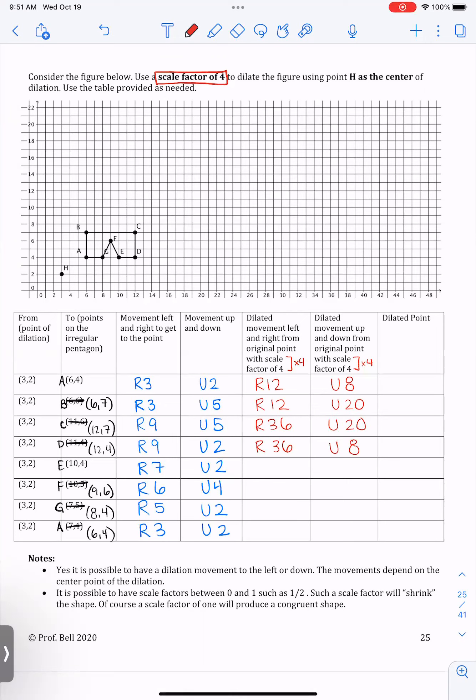Okay, I'm multiplying everything by four. So that'd be right 28, up eight. Six times four is 24, so I go right 24 units. Four times four is 16, so up 16. Then right 20, up eight.